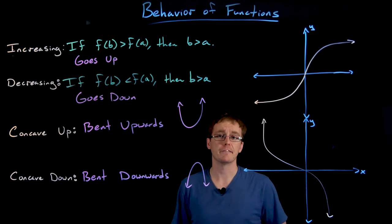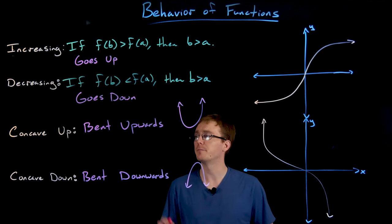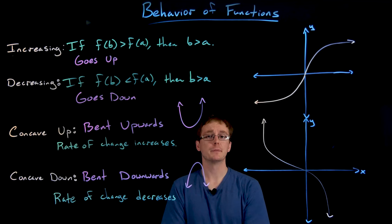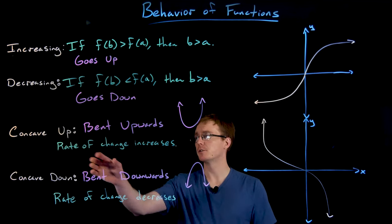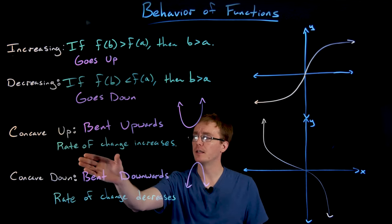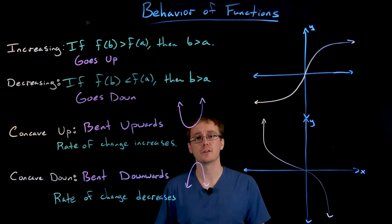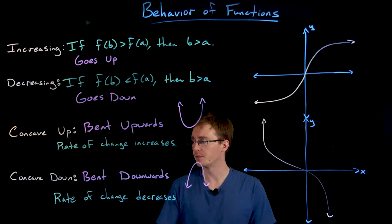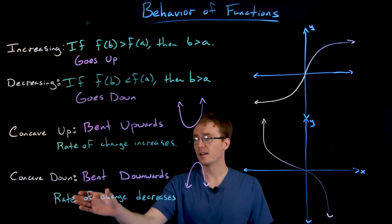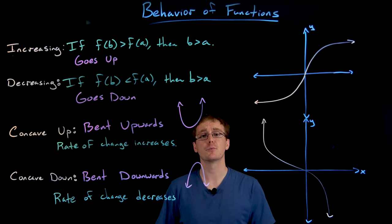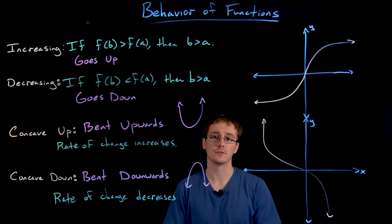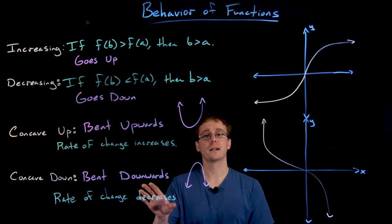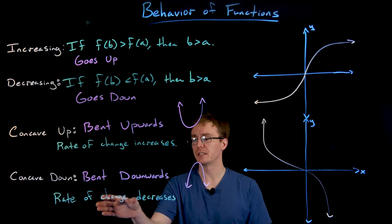That informal definition of concavity should get us through this class, but we'll also write down the formal statements. A function is concave up on some interval if the rate of change of the function is increasing on that interval — not that the function itself is increasing, but that its rate of change is increasing. A function is concave down on some interval if the rate of change decreases throughout that interval. We will revisit these concepts in calculus.